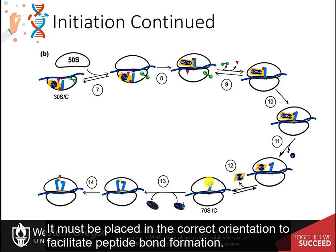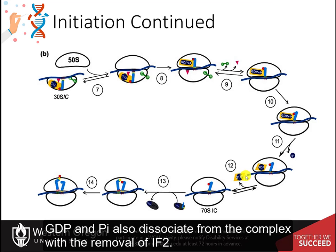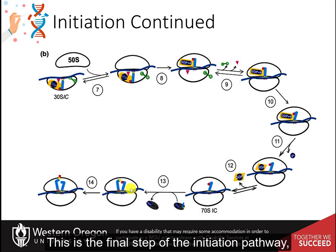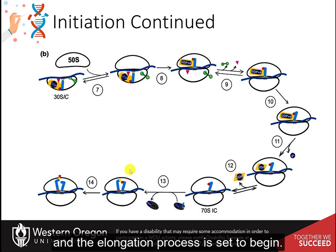IF2 leaves the ribosome after having positioned the tRNA fMet in the P site of the 70S initiation complex. It must be placed in the correct orientation to facilitate peptide bond formation. GDP and Pi also dissociate from the complex with the removal of IF2. This is the final step of the initiation pathway, and the elongation process is set to begin.